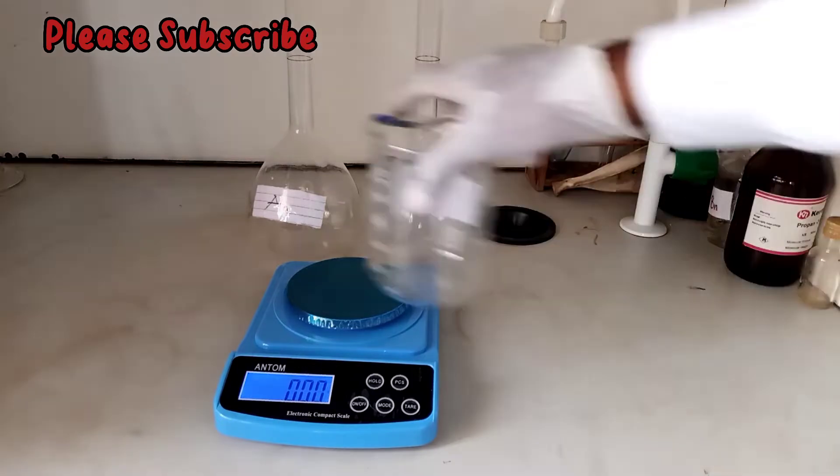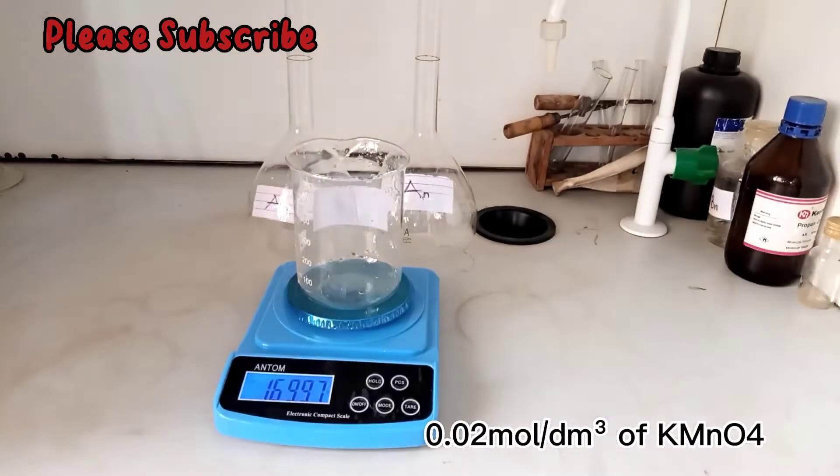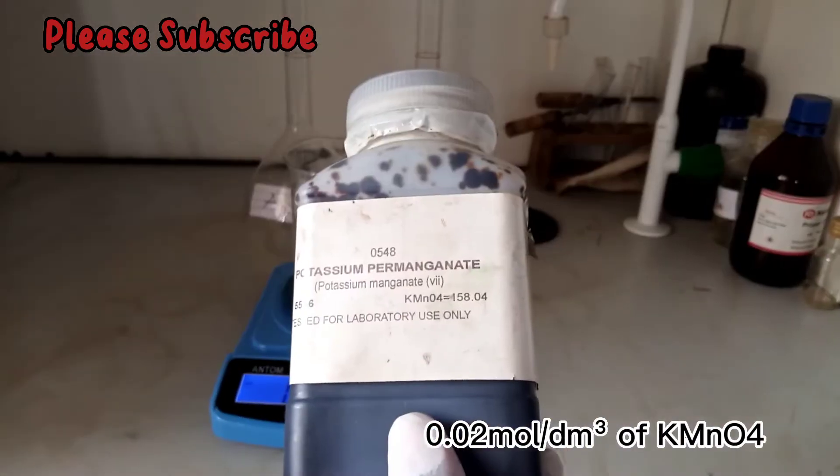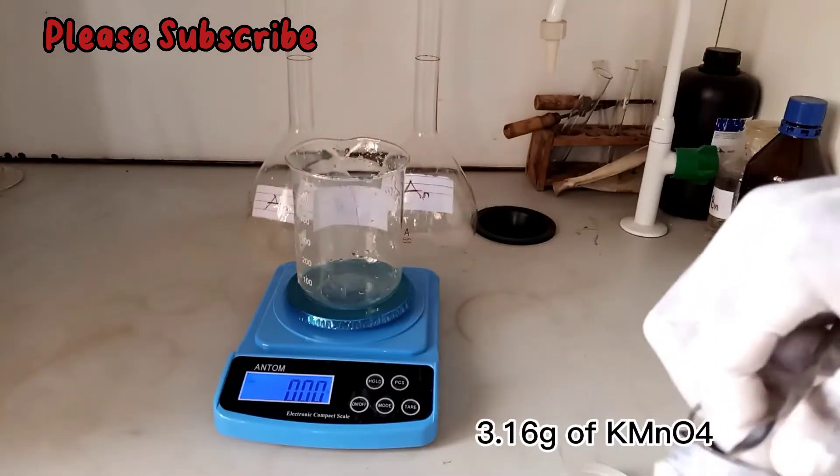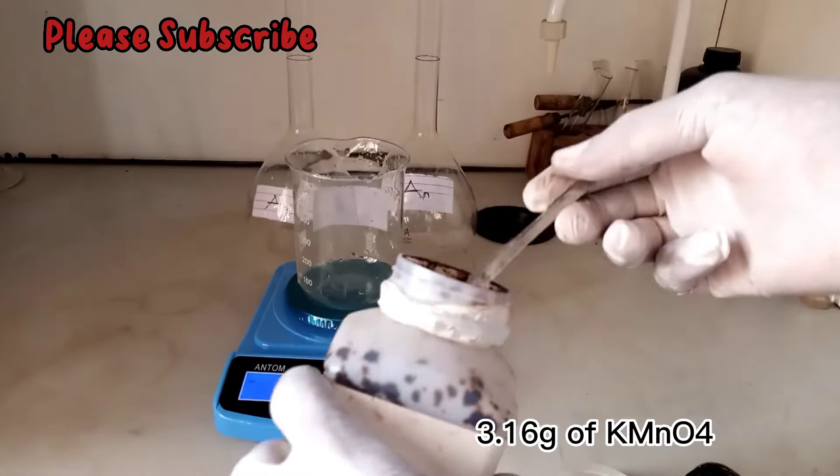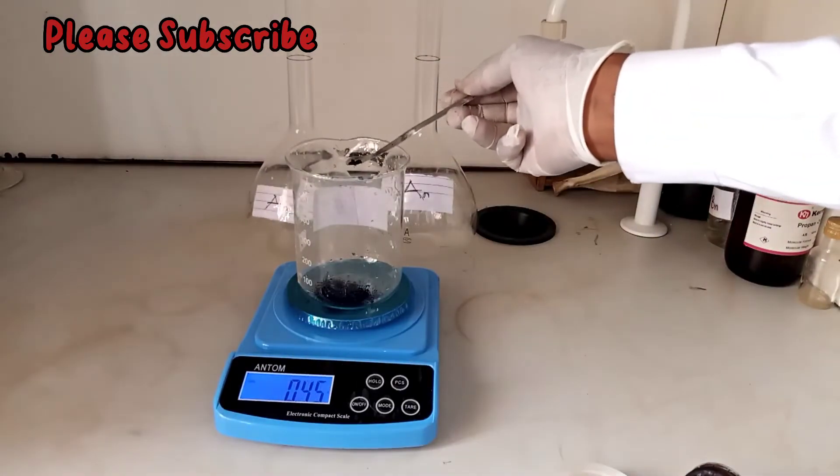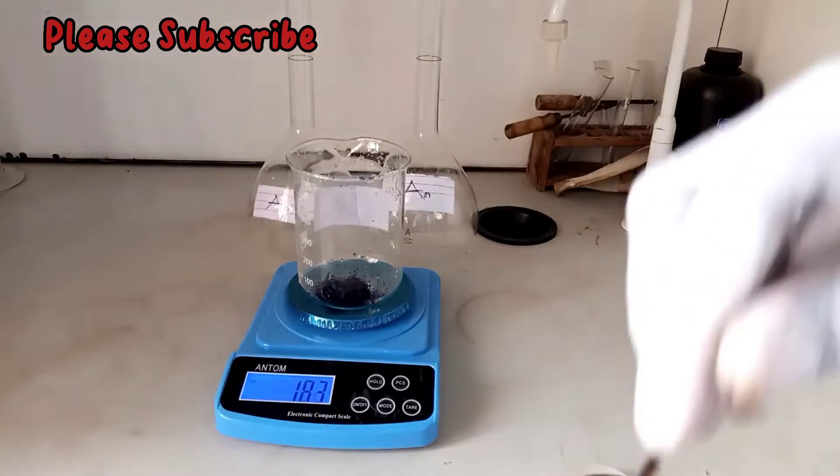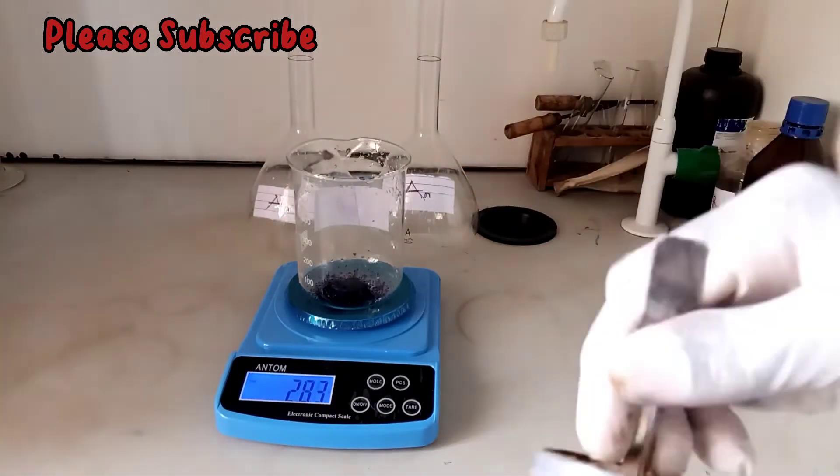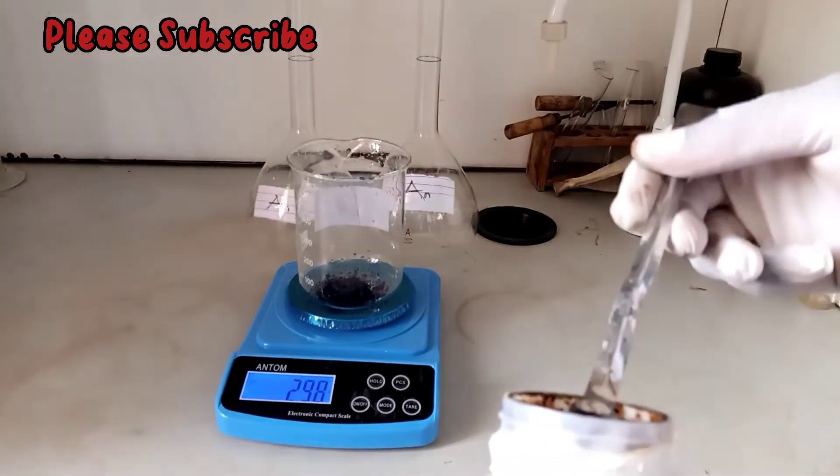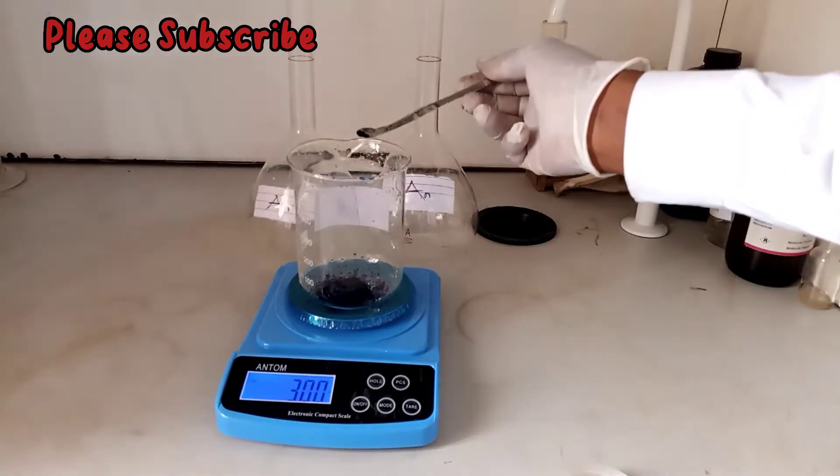We'll start with the preparation of 0.02 mole of potassium permanganate per dm³. First you weigh out 3.16 grams of potassium permanganate.